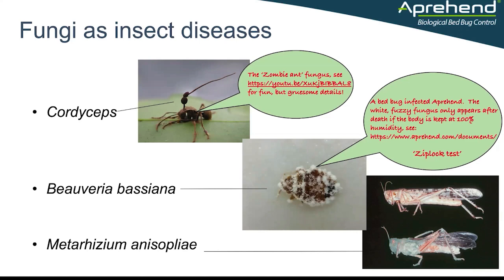In the other photographs, you can see a bed bug infected with Beauveria bassiana and a locust infected with a fungus called Metarhizium anisopliae. This external appearance of fungal spores on the outside of the insect is only seen when you incubate those insects at 100% humidity. Under normal circumstances, insects killed by a fungus don't generally display spores on the outside of the body — it's only if you purposefully incubate them at 100% humidity that you can see this process happening.